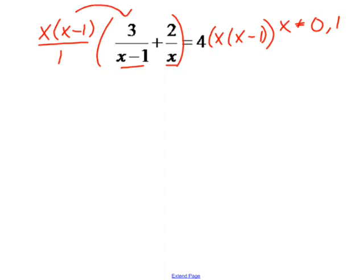When I multiply times the first fraction, my x minus 1 is cancelled, and I'm left with 3x. When I multiply times the second fraction, my x's cancel, and I'm left with 2 times x minus 1.